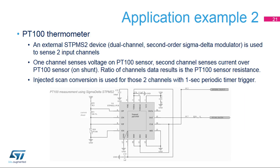Another example is a PT100 thermometer using an external STPMS2 Sigma Delta modulator monitoring two channels — one sensing voltage and one sensing current on the PT100 sensor. Both channels are sampled using timer-triggered injected conversions in scan mode. Software then computes the PT100 resistance from the collected data and finally the temperature.